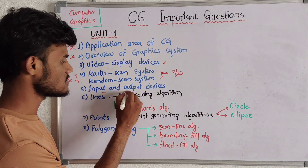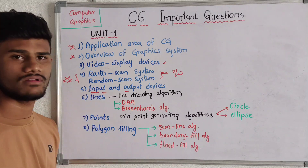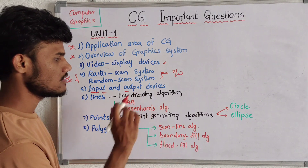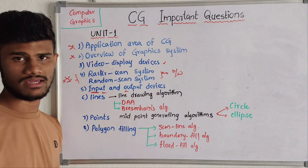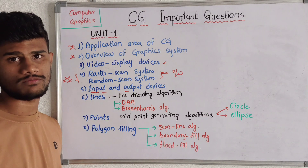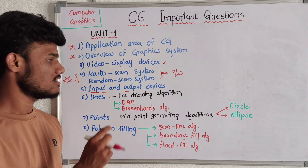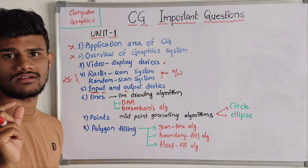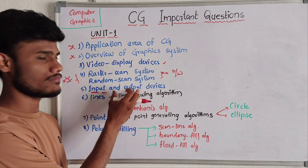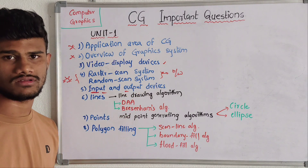Next we have input and output devices. Majorly they ask about input devices, but if they ask for 10 marks, you need to elaborate the answer by combining both input and output topics together.